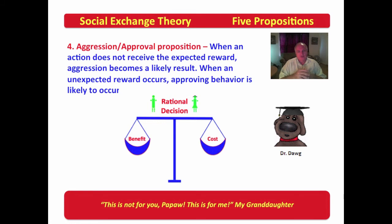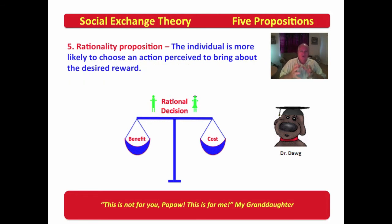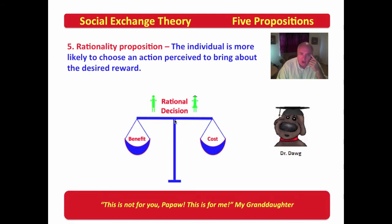In the rationality proposition, the individual is seen as being more likely to choose an action perceived to bring about the desired reward. We're back to the core social exchange theory concept that humans are thinking, rational beings, measuring benefit against cost to see if social gain is to be achieved from the decision.